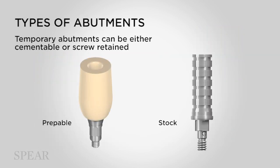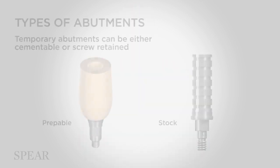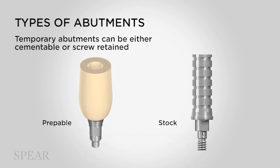There are also temporary abutments we can use to fabricate long-term provisional restorations, specifically if we want to use the provisional to help develop tissue contours. There are two different kinds: the preppable peak abutment, which is a plastic-like material that's prepped and polished — probably best used for cemented provisionals — and the stock abutment, which can be cut to length and used as a screw-retained provisional. While both can be screw retained, it's easier to do a screw-retained provisional restoration with the stock abutment.